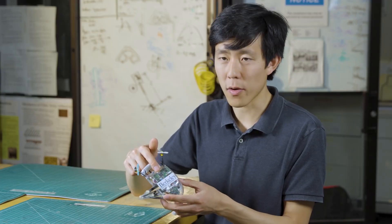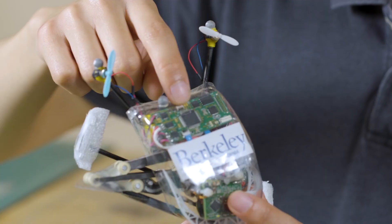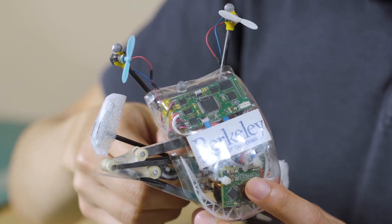This is Salto's control board. This carries the little tiny computer that's doing all of the processing and runs the algorithms that we've written for it.